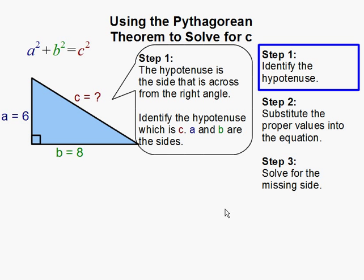Step 1: Identify the hypotenuse. The hypotenuse is the side that is right across from the right angle. Here is our right angle, and this is the hypotenuse, which is c. That's what we are solving for. a and b are the legs of the triangle, which are 6 and 8.